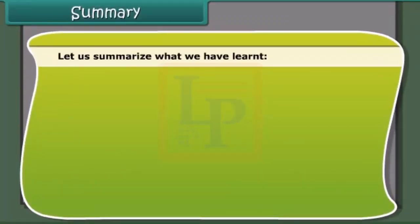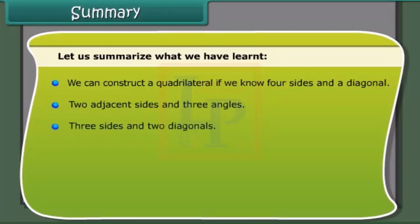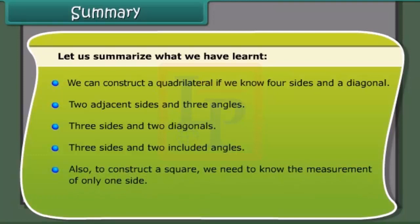Summary. We construct a quadrilateral if we know: four sides and a diagonal; two adjacent sides and three angles; three sides and two diagonals; or three sides and two included angles. Also, to construct a square, we need to know the measurement of only one side.